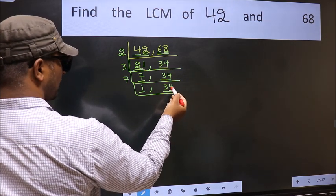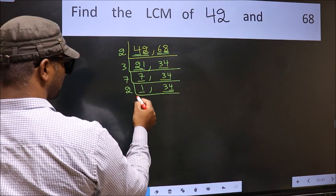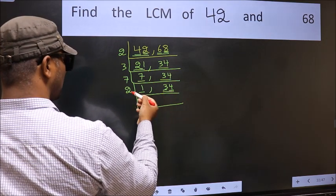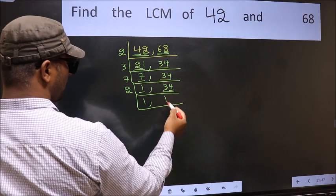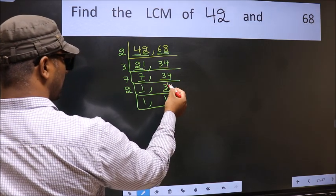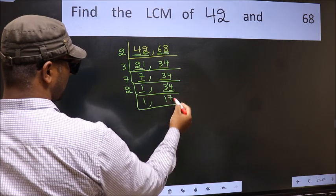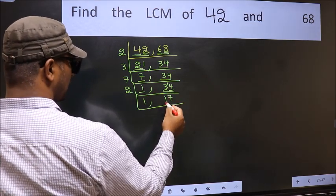Last digit 4, even, so take 2. First number 3, a number close to 3 in 2 table is 2 times 1 is 2, 3 minus 2 is 1, 1 carried forward makes 14. When do we get 14 in 2 table? 2 times 7 is 14.